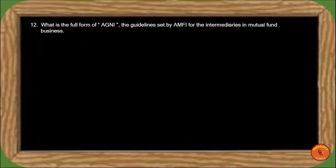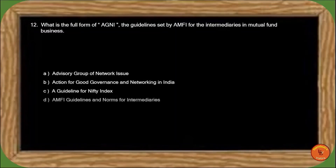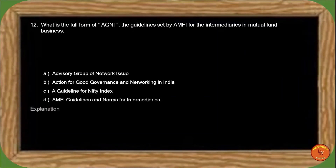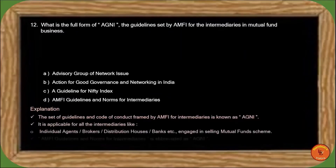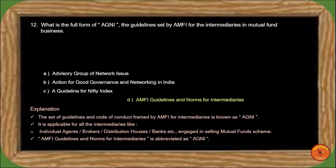Next question: What is the full form of AGNI — the guidelines set by AMFI for intermediaries in the mutual fund business? The guidelines set by AMFI for intermediaries are known as AGNI, applicable to all intermediaries such as individual agents, brokers, distributors, banks, and distribution houses. AMFI Guidelines and Norms for Intermediaries is abbreviated as AGNI. So the correct answer is option D, AMFI Guidelines and Norms for Intermediaries.